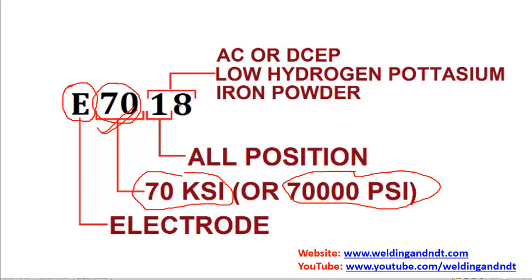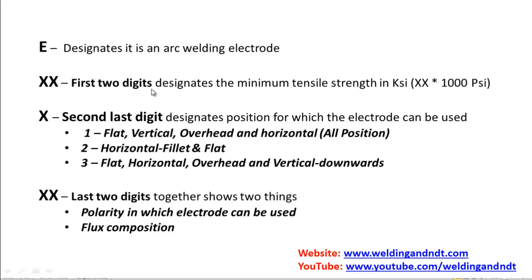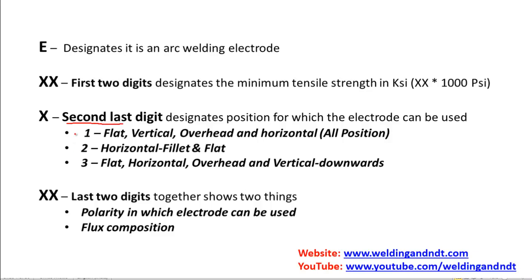The second last digit — here we have '1' — represents in which position this electrode can be used. If there is '1' in the second last digit, it means the electrode can be welded in all positions. If there is '2', the electrode can be used in horizontal fillet and flat position. If there is '3', it can be used in flat, horizontal, overhead, and vertical downward positions.